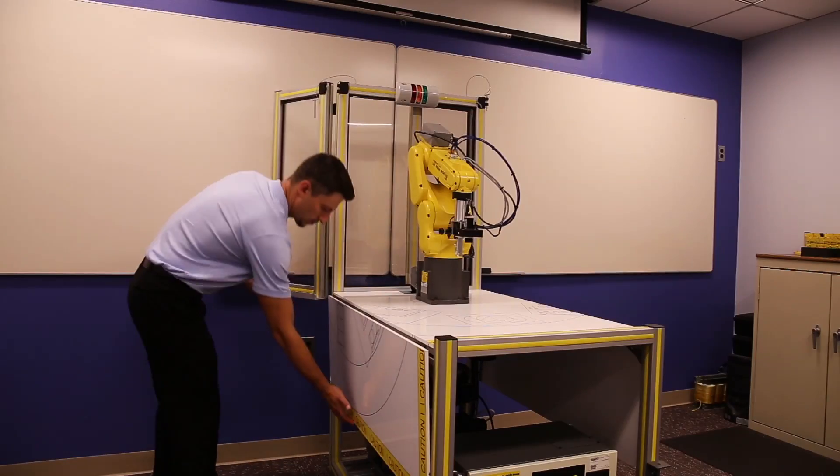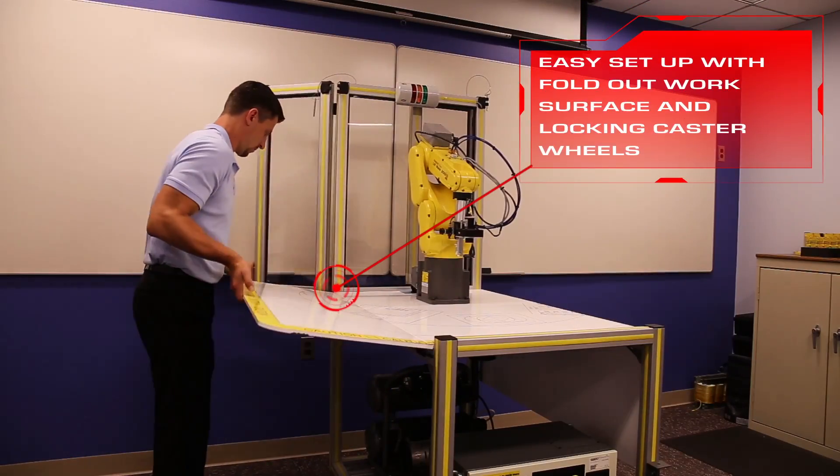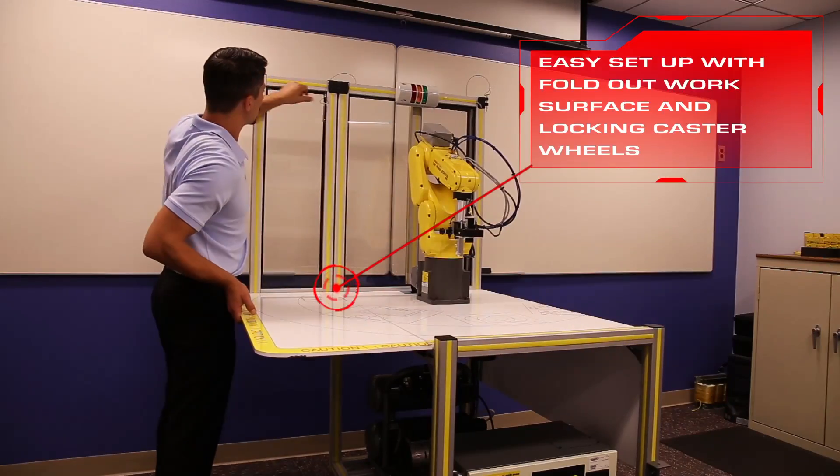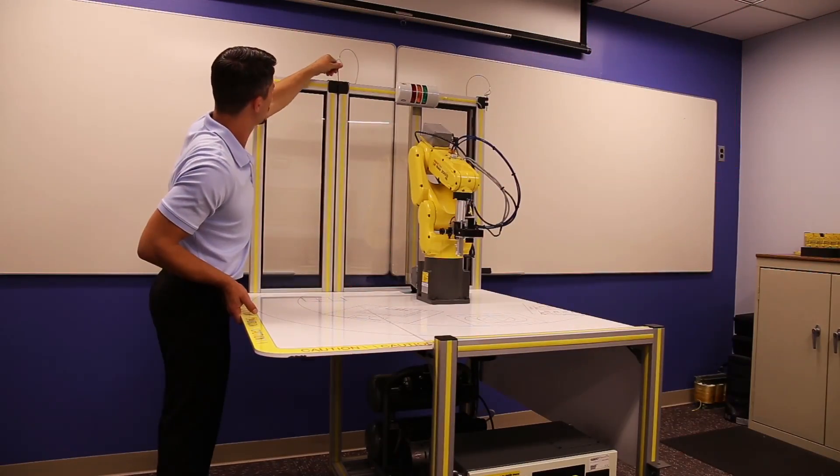The FANUC Fenceless CertCart comes equipped with a fold-up tabletop and fold-out windows that are easy to expand and collapse and locking caster wheels.